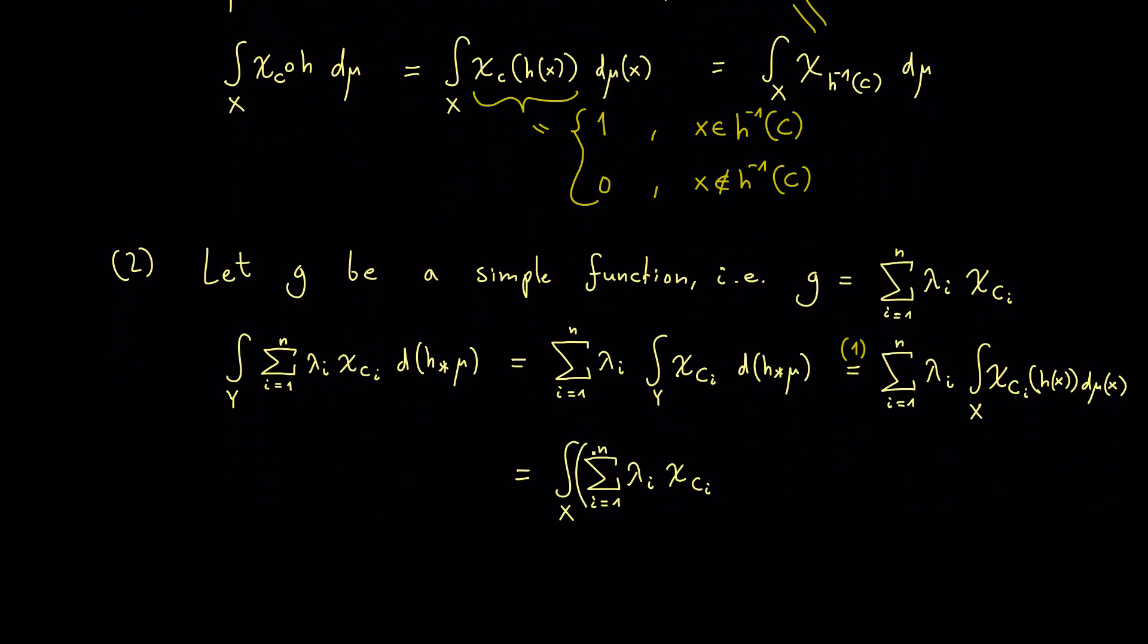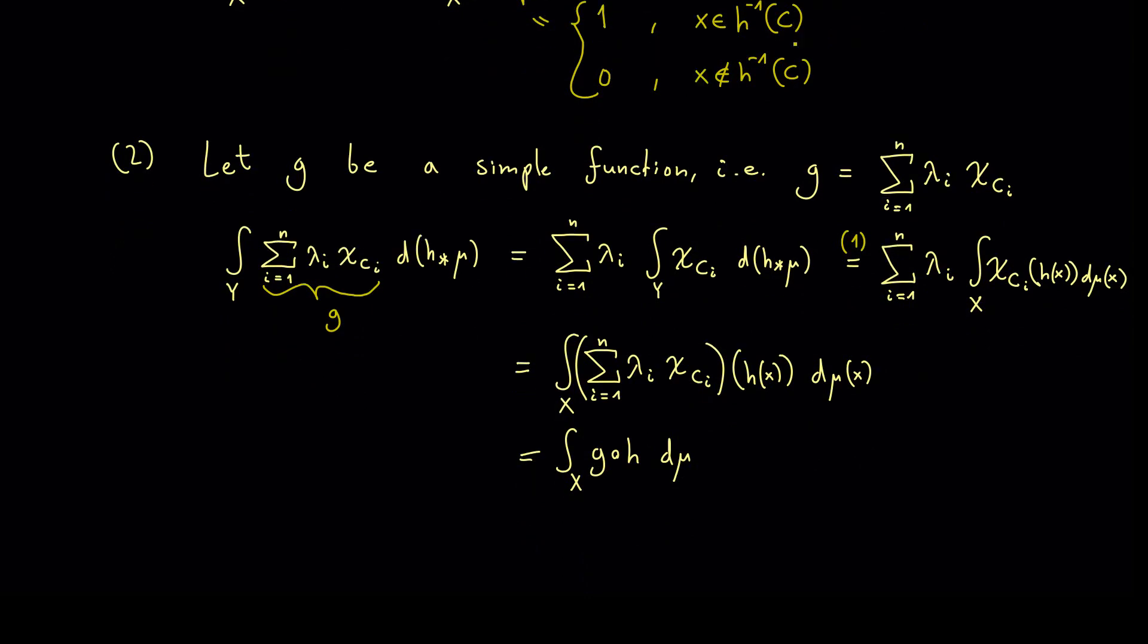And here I want to use parenthesis and say ok we put in h of x and here we have d mu x. However now you see this is exactly our right hand side because this is just g our simple function and the composition with h over x and the measure mu. And of course on the left hand side we started with the function g. And with this we have proven the substitution rule for all simple functions.